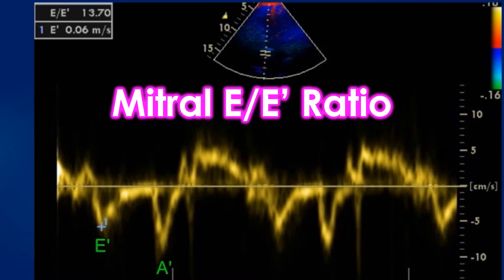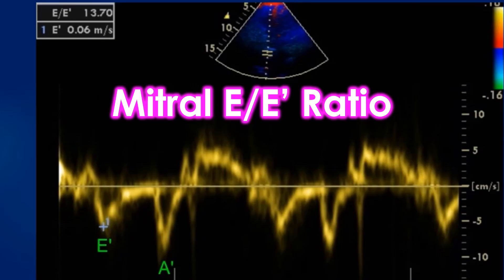Initially, Mitral E wave is measured and stored as given in the image below. After that, Colored Tissue Doppler, also known as Tissue Velocity Imaging or TVI mode, is switched on to assess Tissue Doppler. The cursor is placed over the medial mitral annulus and Tissue Doppler tracing obtained. E' velocity is measured and stored. The software usually gives the E by E' ratio.